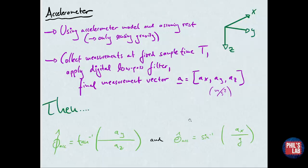Then, assuming the system is at rest, we can estimate our roll and pitch angles using these formulas. The arctan of AY over AZ is our roll, and the arcsine of AX over g, the gravitational constant at Earth's surface, roughly 9.81 meters per second squared. We will later combine these accelerometer angle measurements with the gyroscope angle measurements.